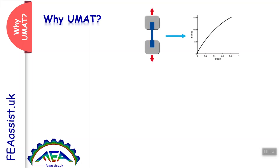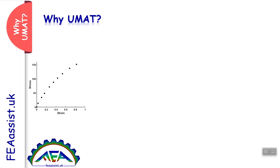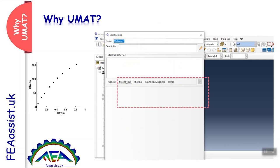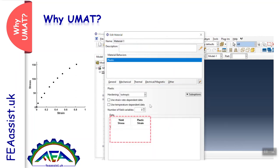Consider you have a sample and you want to apply a load and, by modeling and simulating, predict the mechanical response of this sample — predicting the stress-strain curve. The first strategy is that you have some points of your stress-strain behavior from the lab or from published experiments. You can easily go into Abaqus, go to the property, define a new mechanical plastic behavior, and enter those points. This is the simplest way of solving the problem.